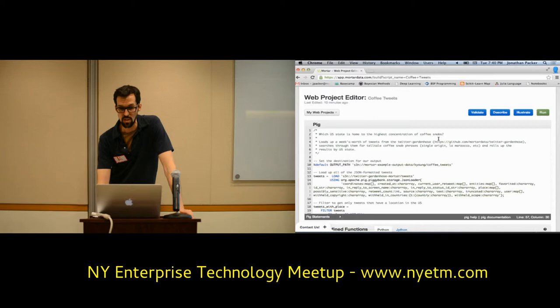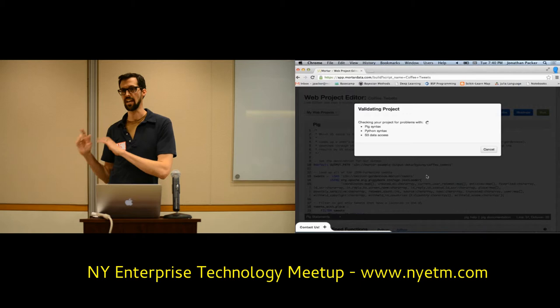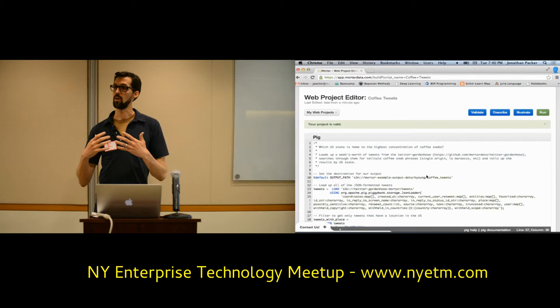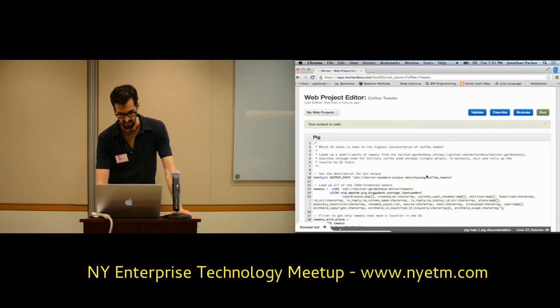One of the first things we can do is validate the script. It checks the syntax of Pig, the syntax of Python, and it actually goes and makes sure we can access the data where it's sitting — in this case reading from S3, so it checks all our permissions. The value of this is it saves you a lot of time. Compare that to running your own Hadoop cluster or Elastic MapReduce — you spin up a bunch of machines, distribute the code, start executing, and it dies saying 'you have a typo.' That's also costly. So: project is valid. We've got the little green bar.